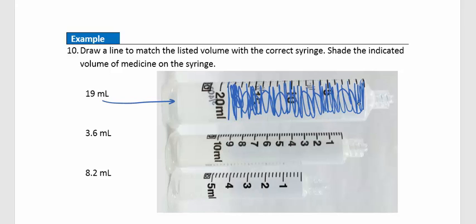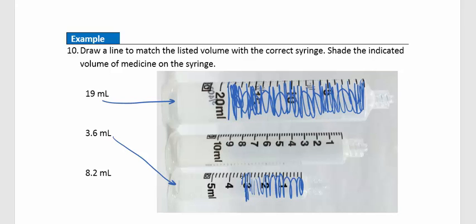For 3.6 mL, we use the smaller syringe. Notice there are 5 marks between whole numbers, so each mark represents 0.2 milliliters. We shade up to 3, then count 3.2, 3.4, 3.6 — shade to that point. For 8.2 mL, markings go by increments of 2, so we shade right to 8.2 and fill that in.